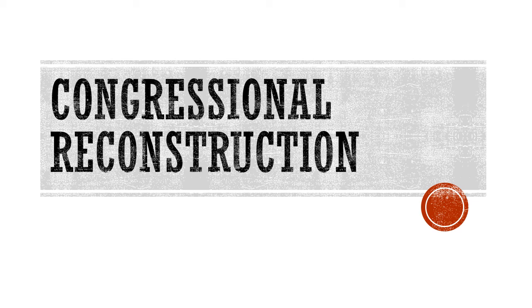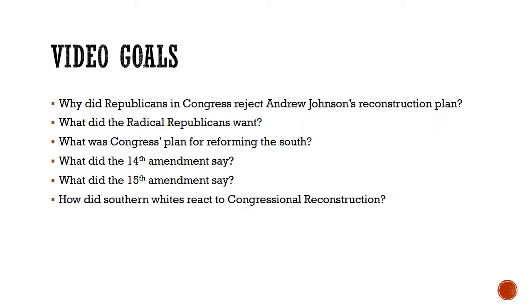In this video, we're going to be learning about Congressional Reconstruction. By the end of this video, you should be able to explain why Republicans in Congress rejected Andrew Johnson's Reconstruction plan, describe what the Radical Republicans wanted, discuss Congress's plan for reforming the South, and explain what the 14th and 15th Amendments were all about, as well as how Southern whites reacted to Congressional Reconstruction.